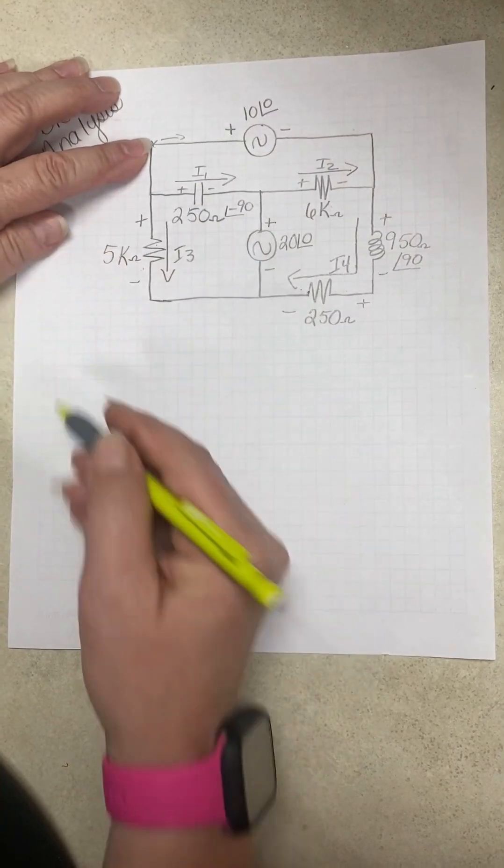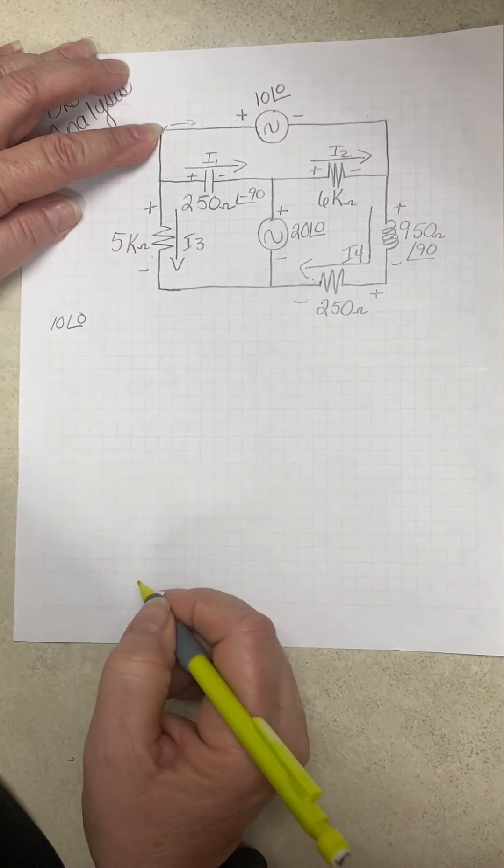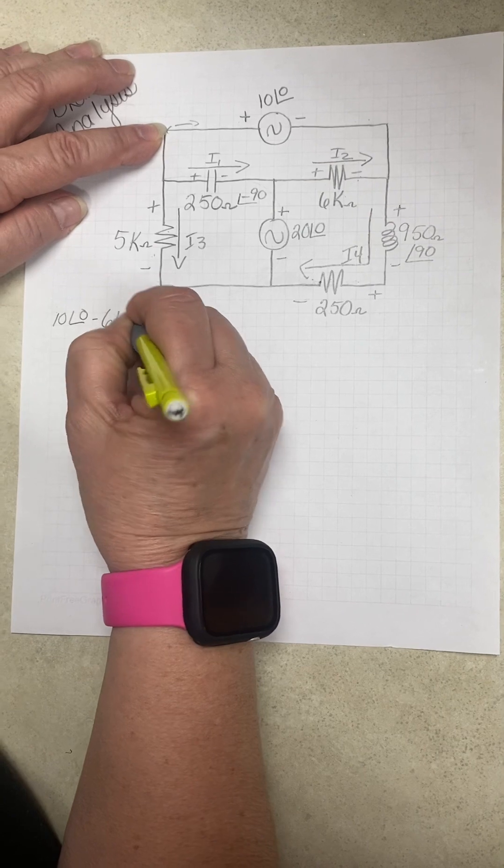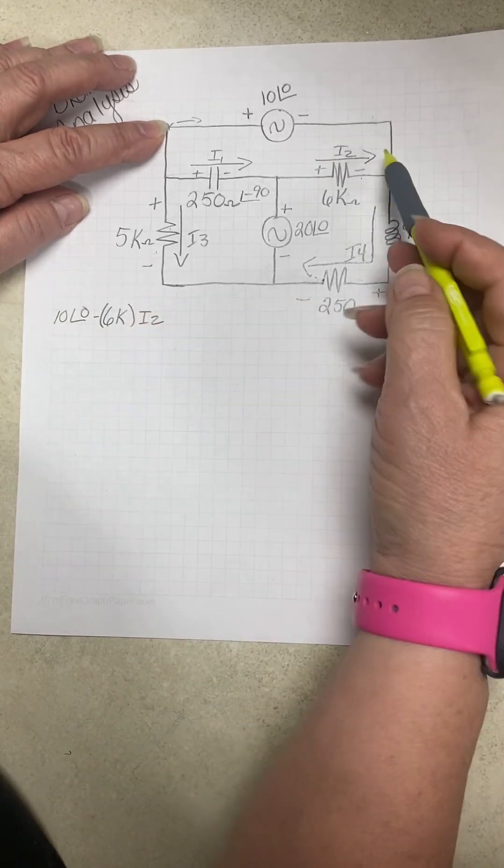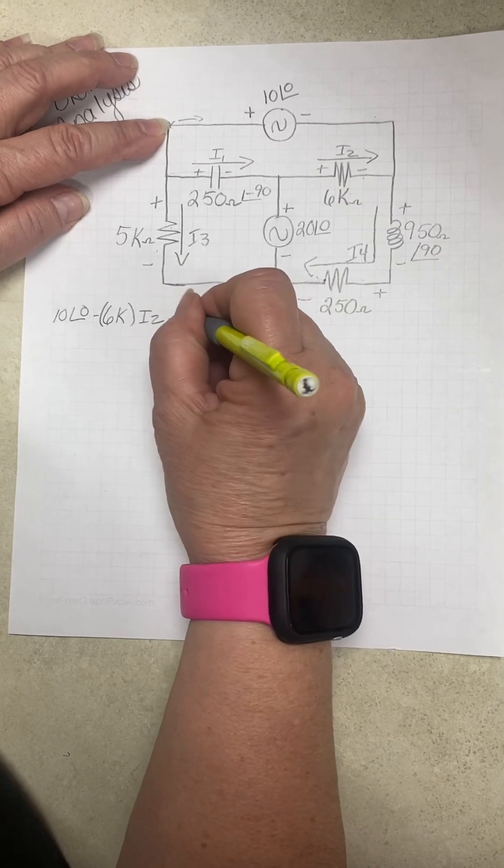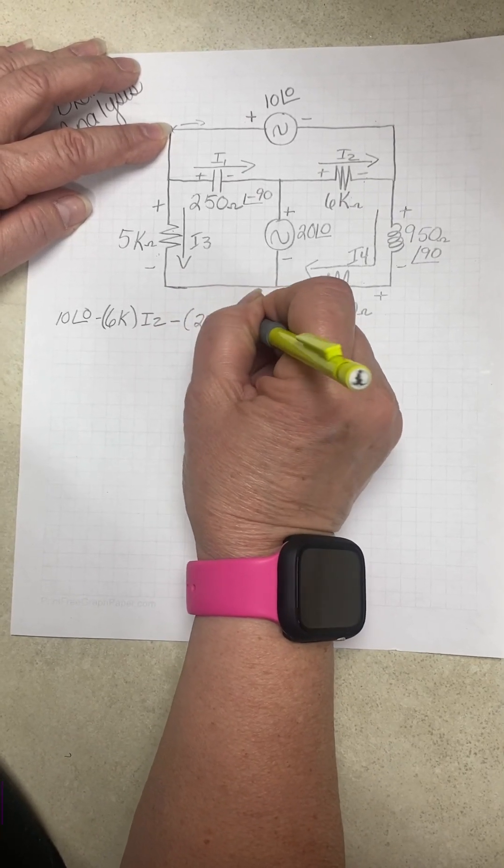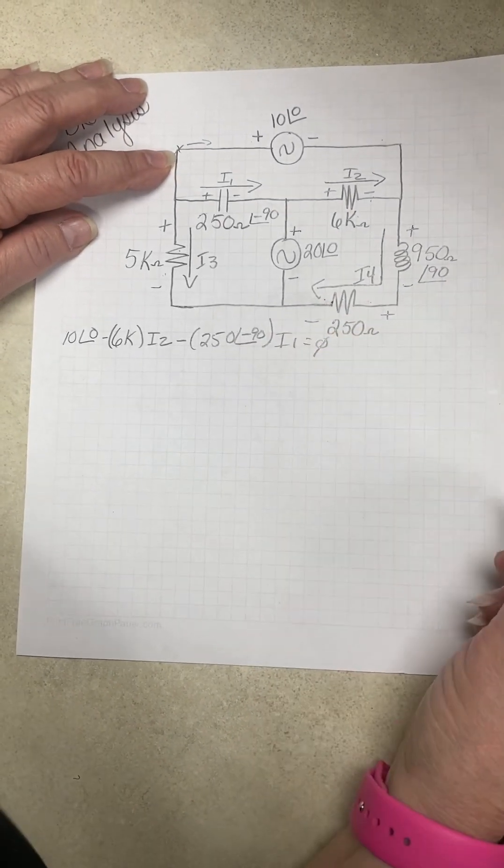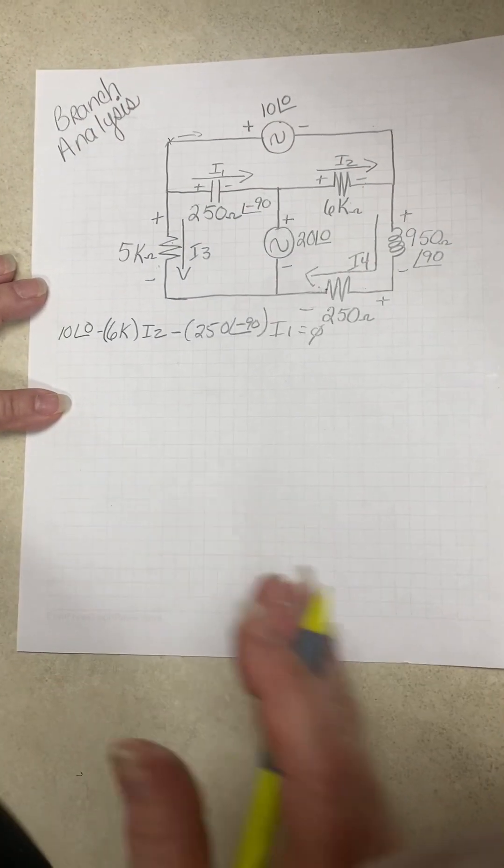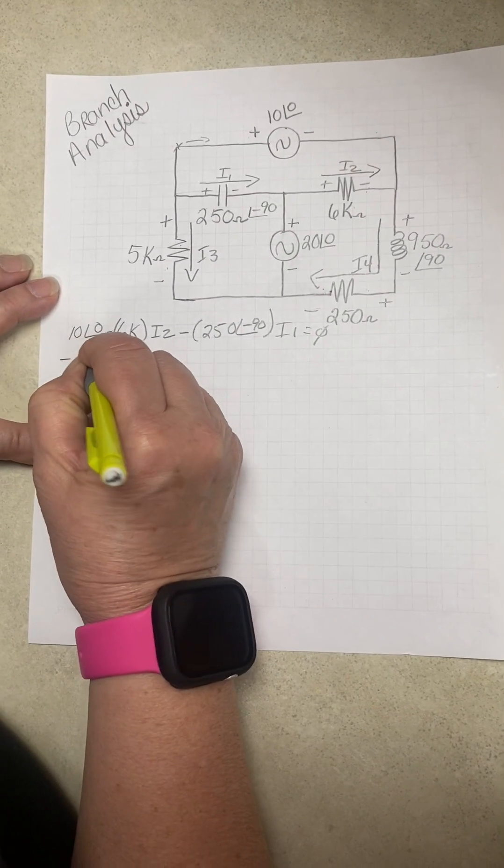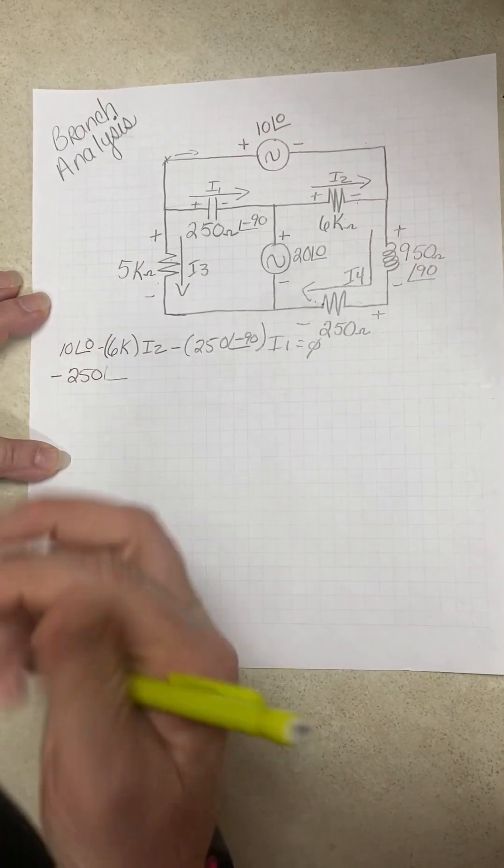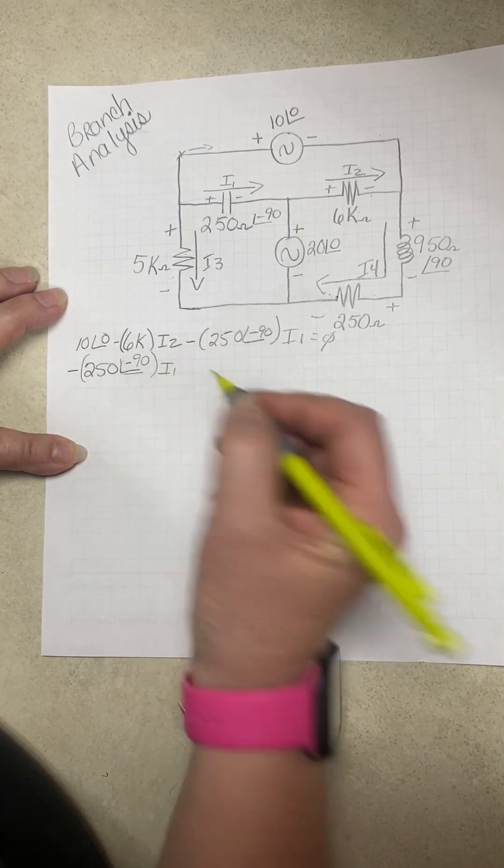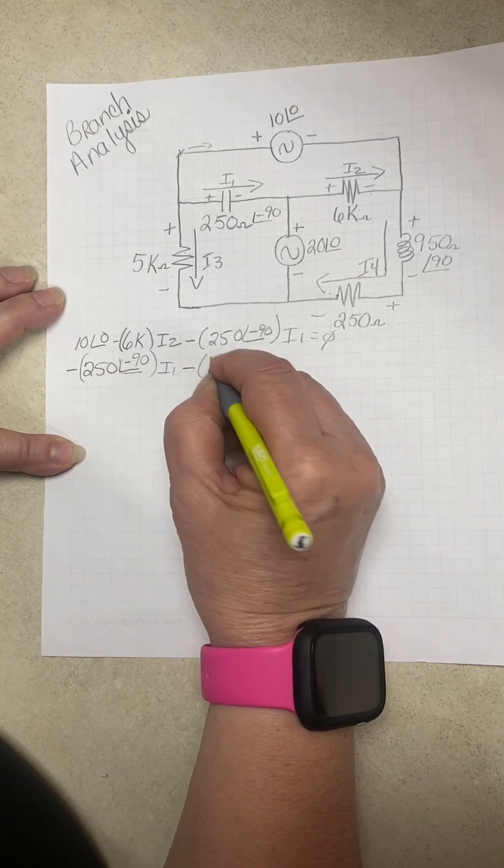So we're going to go around here. We're entering the positive 10 at zero. We go around negative 6K, I2, keep on going, negative 250, 250 at negative 90, I1. Then we're back here, equals zero. So now we've got to fix it up. I1, I2, I3, I4. So we have negative 250 at an angle negative 90, I1 minus 6K, I2.